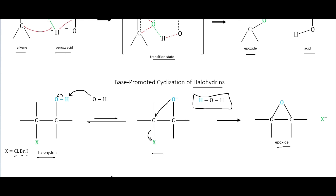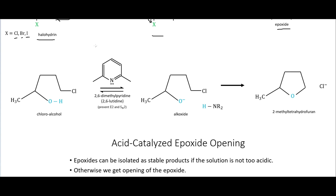One problem with this is that we can get a lot of side reactions. We could have this go and take this hydrogen in an E2 reaction, where that will collapse down, or we could have this actually do an SN2 reaction on that carbon. A lot of times what we want to do is use a base like 2,6-dimethylpyridine. This is bulky enough that it's not going to go after the carbon; it will actually just go after this hydrogen right here. Those go to that oxygen, so we end up with this alkoxide. This can then go after that carbon there, and those will leave with that chloride. We end up with this 2-methyl tetrahydrofuran, which isn't an epoxide, but it is an ether.